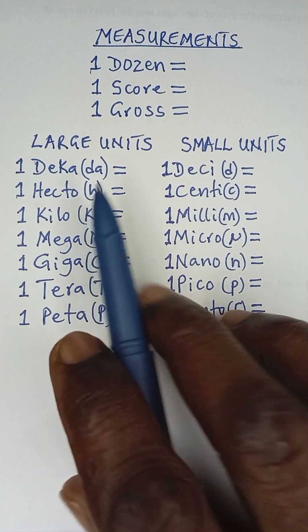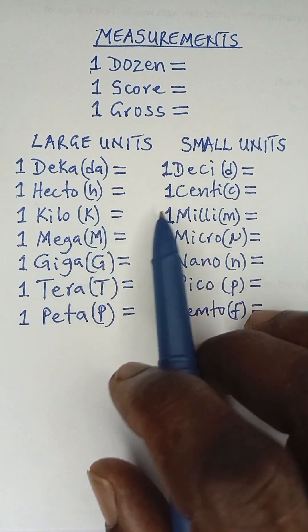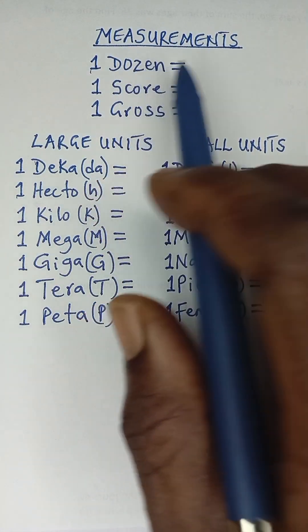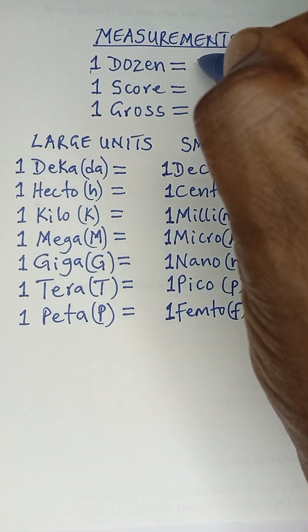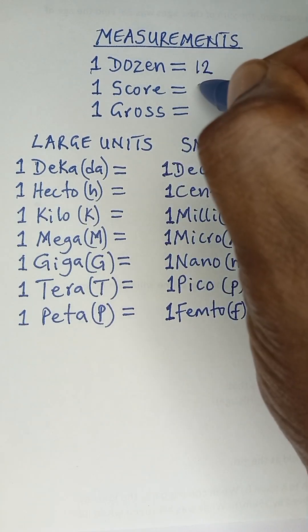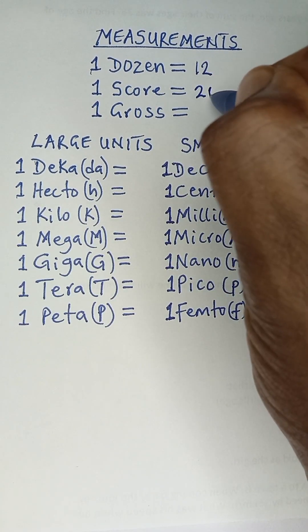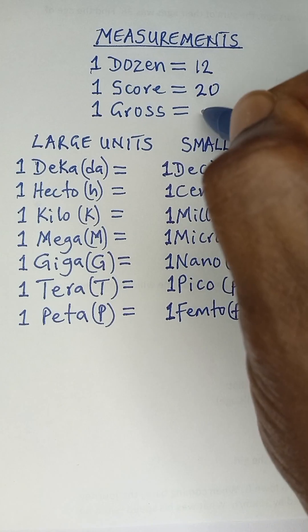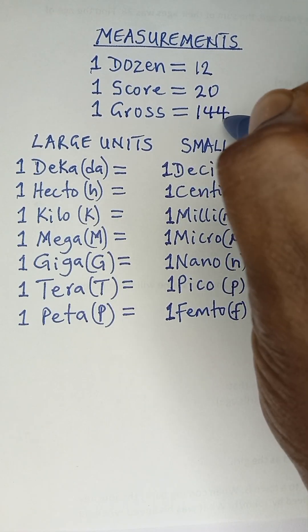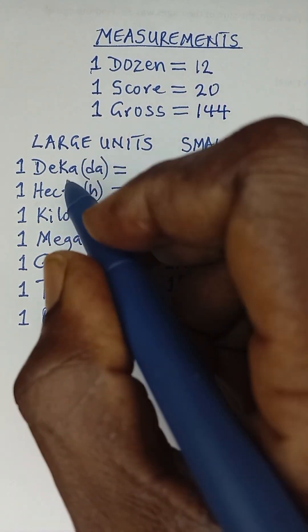Let us look at these units of measurements. For a dozen, a dozen is 12, a score is 20, and one gross is 144, that is 12 dozen. For large units,